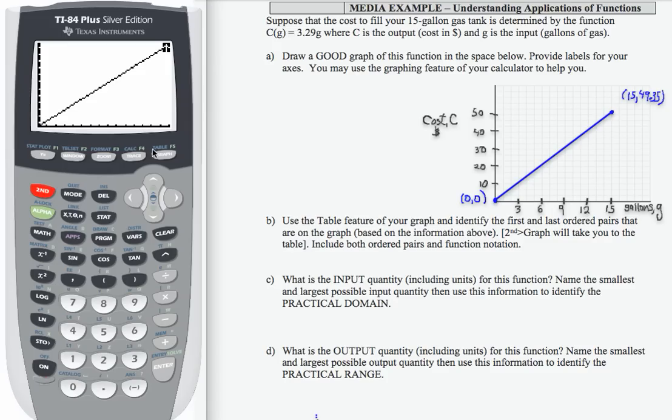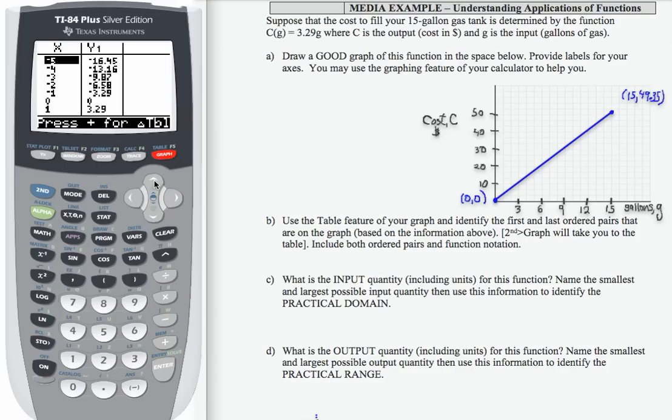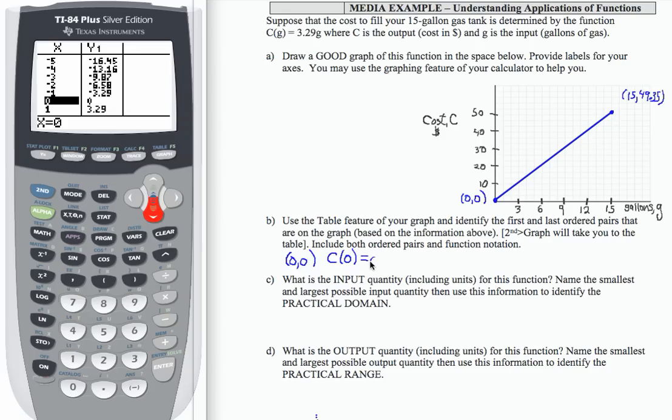And that's actually coming to us from part B of this problem. So let's take a look here. I don't have any negatives, but at zero, I get zero. So I'm going to go ahead and write that in the space here, even though I have it above. And it asks me to use both ordered pair and function notation. So that would be C of zero equals zero. So that's the first one.